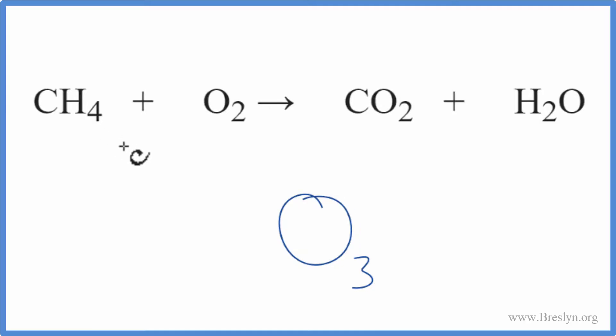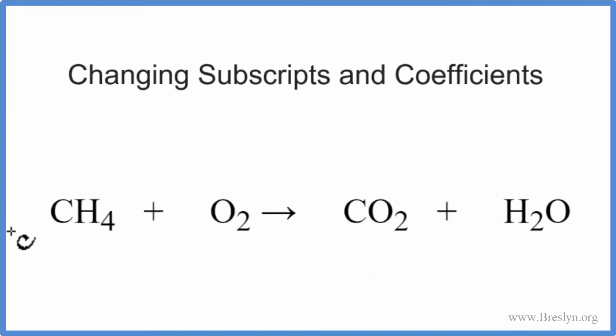Then what can we change? The things we can change are the coefficients. These are the numbers in front of the compounds. Right now, we don't see any. And if you don't see any, you assume it to be 1. When we balance an equation, we change the coefficients.